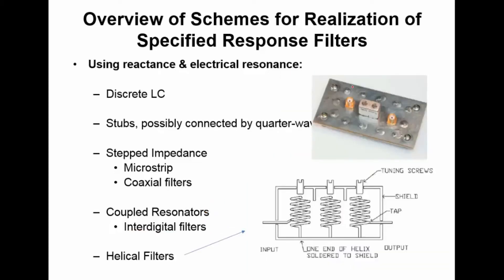One other type of filter is the helical filter. These show up quite a bit in the VHF and UHF band and have extraordinary selectivity, which is one reason they continue to appear even though they're relatively bulky. These are designed with helices — coils inside cavities — where each cavity has a resonance, which you can map to LC resonators. You can tune these resonances using tuning screws which change the frequency of resonance, and then there's the input and the output.